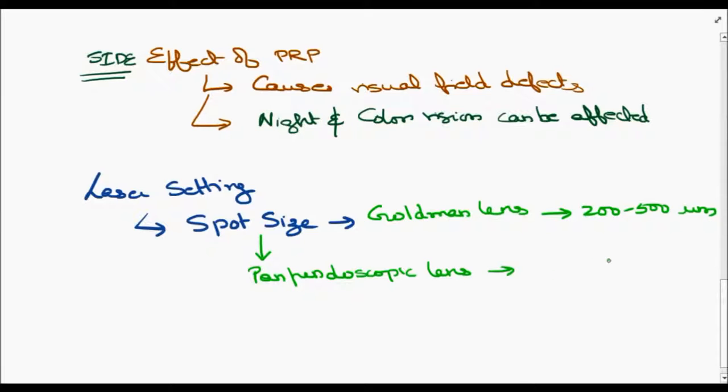Whereas in pan-fundoscopic lens, it is about 100 to 200 microns. The effect is related to the surface area, that is, the burn.